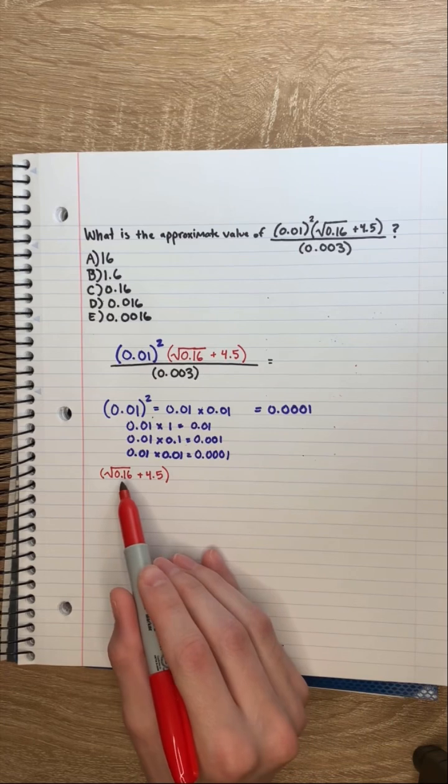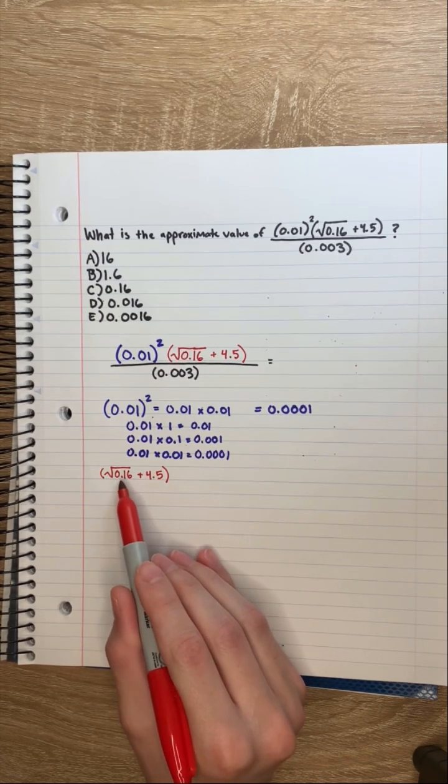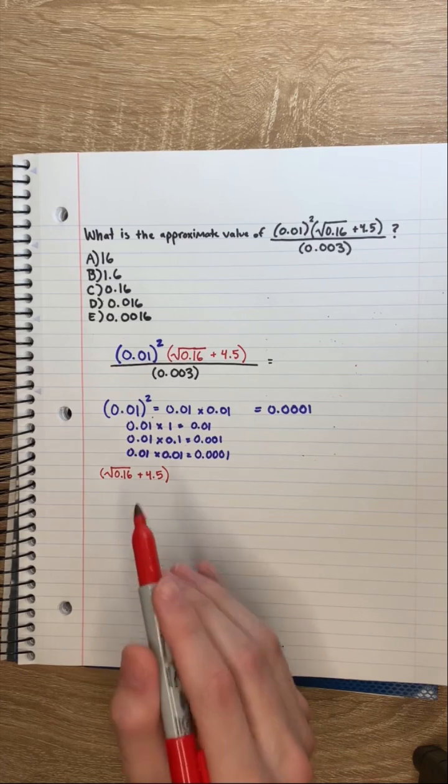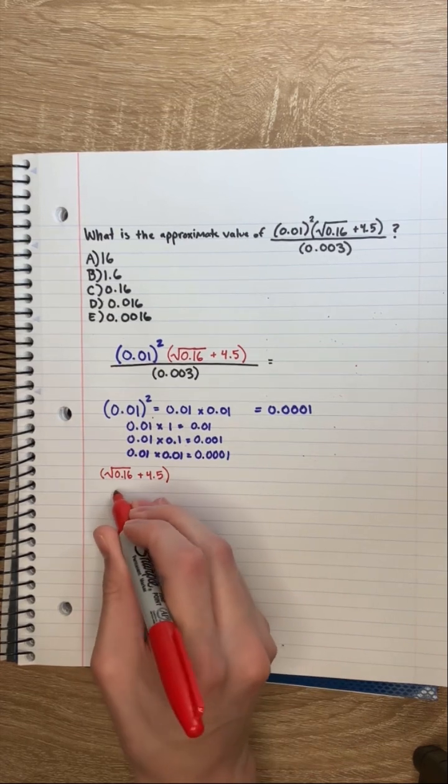Now for the second piece, you just need to recognize that 0.16 looks like the square root of 16. And the square root of 16 is 4. So the square root of 0.16 is 0.4.